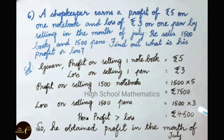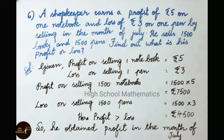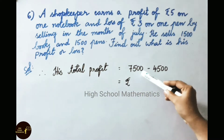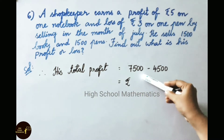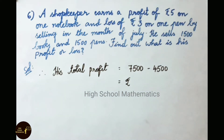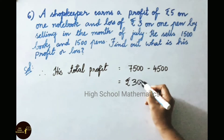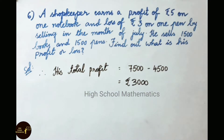Here, profit is greater than loss, so he obtained a profit in the month of July. His total profit equals profit on selling 1500 books, 7500, minus loss on selling 1500 pens, 4500. So 7500 minus 4500 equals 3000 rupees. Therefore, the total profit he obtained is 3000 rupees.